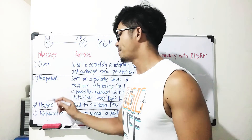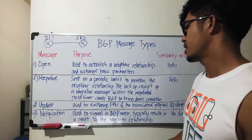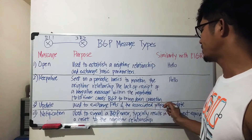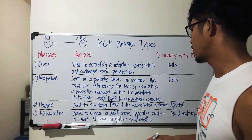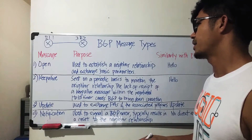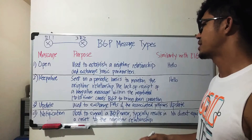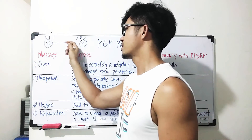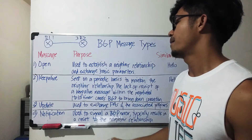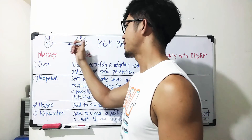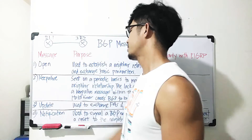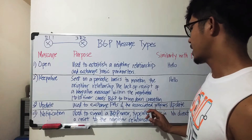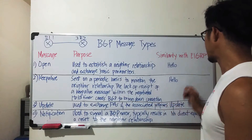Let's talk about the update message. An update message is used to exchange path attributes (PAs) and the associated prefixes that use those PAs. BGP prefixes are also known as NLRI — Network Layer Reachability Information. Once the neighborhood has been established between peers, they can send update messages including path attributes. The update message is similar to the update message used in EIGRP.